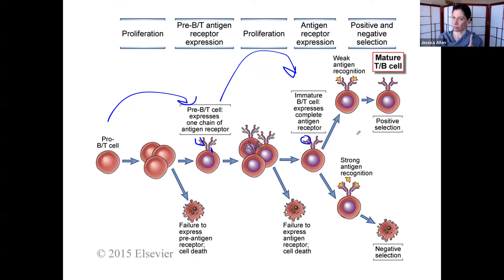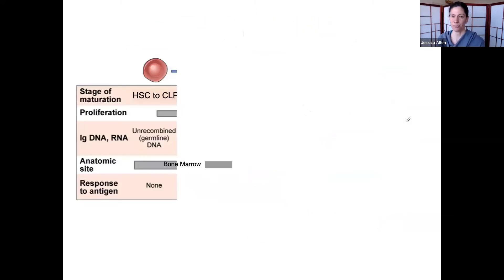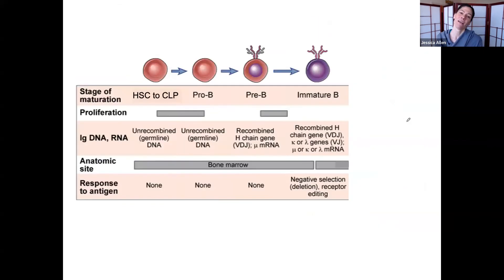Do you recognize self, which is just kind of like, hang out here in this safe space where we know there aren't pathogens? If you don't find anything, great. You get to become a mature B-cell. Positive selection is more for T-cells.